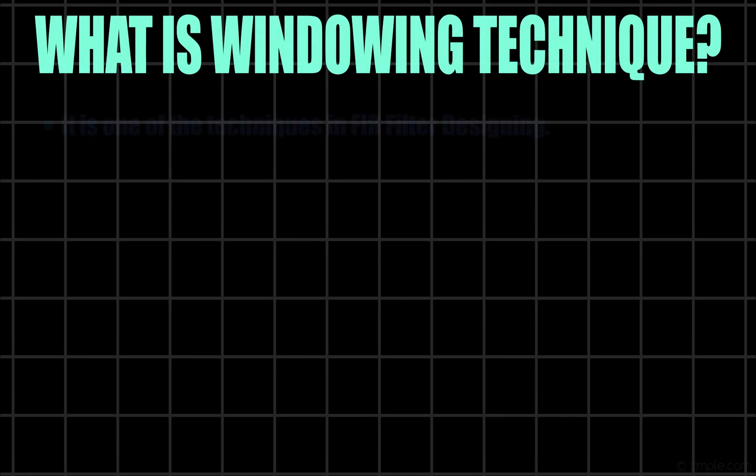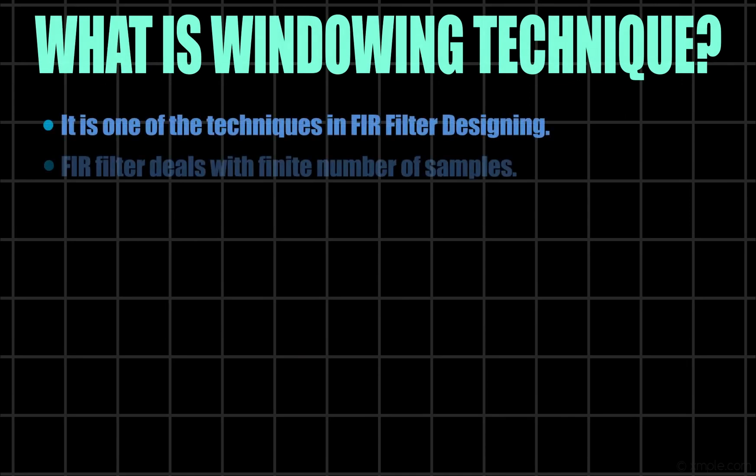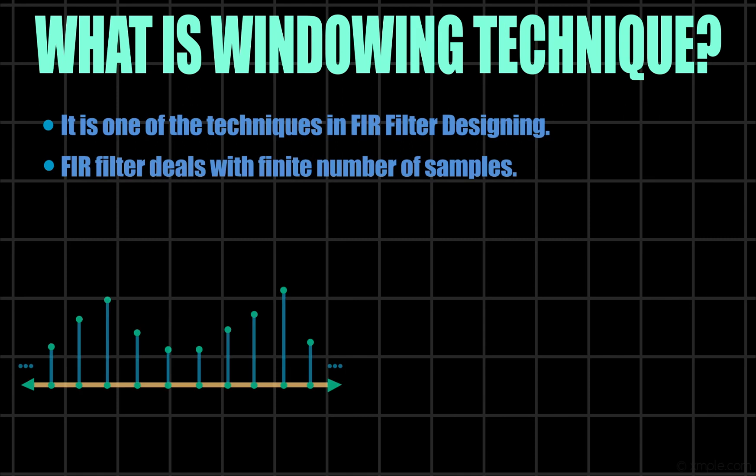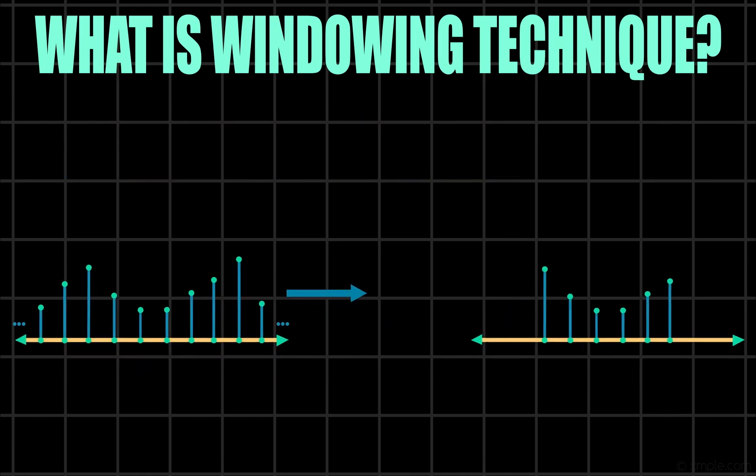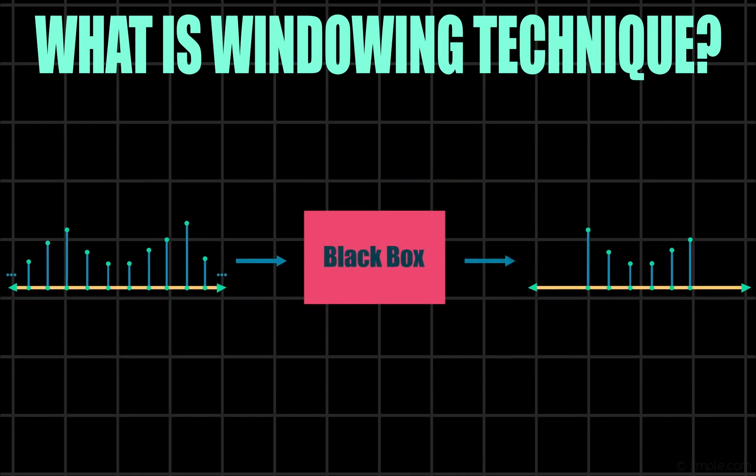What is windowing technique? It is one of the techniques in FIR filter designing. As FIR filter deals with finite number of samples, there is a need to first convert an infinite impulse response to a finite impulse response. For achieving this we need a black box that only allows the passing of certain samples. This process is called windowing and the black box is referred to as a window.